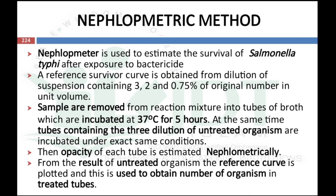The nephelometric method uses a nephelometer to estimate the survival of Salmonella typhi after exposure to the bactericide. A reference survivor curve is obtained from dilutions of suspension containing 3%, 2%, and 0.75% of the original number per unit volume. Samples are removed from the reaction mixture into tubes of growth medium, incubated at 37°C for 5 hours. Simultaneously, tubes with 3 dilutions of untreated organisms are incubated under the same conditions. The opacity of each tube is determined using a nephelometer, and from the untreated organism results, a reference curve is plotted to obtain the number of organisms in treated tubes.